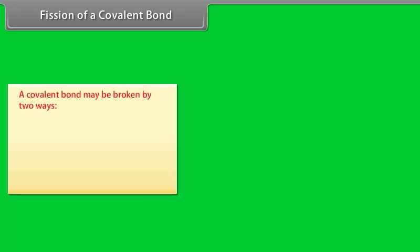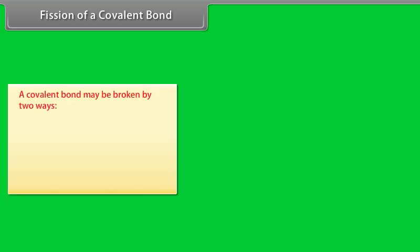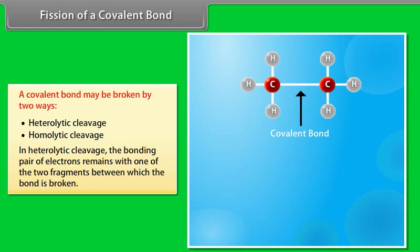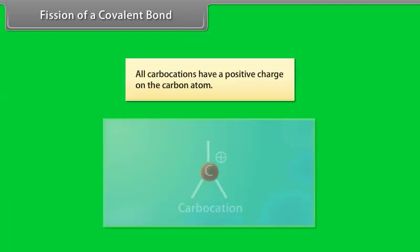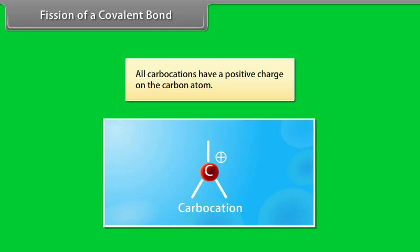A covalent bond may be broken in two ways: heterolytic cleavage and homolytic cleavage. In heterolytic cleavage, the bonding pair of electrons remains with one of the two fragments between which the bond is broken. All carbocations have a positive charge on the carbon atom.